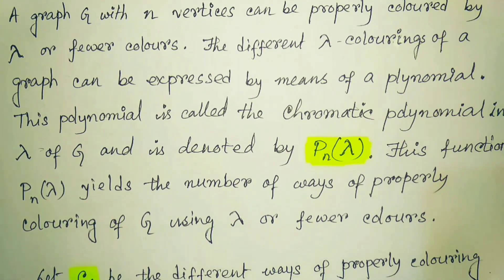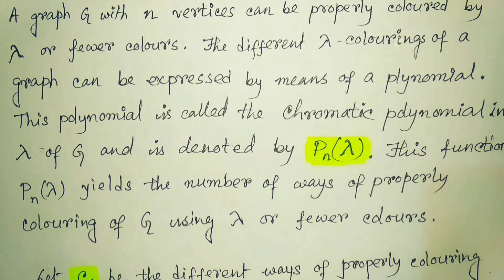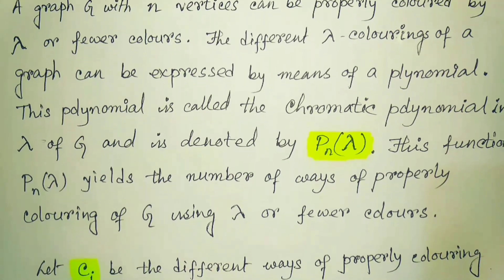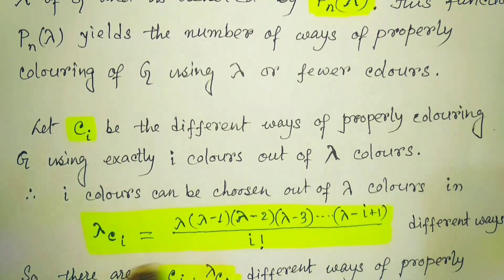This function P(n, λ) yields the number of ways of properly coloring G using λ or fewer colors. Initially, if n number of vertices are given, then we can have at most n number of colors. The color cannot exceed n, but we can initially choose n number of colors — that initially considered color count is λ. Your chromatic number should be either λ or less than λ. So, how to find the chromatic polynomial?